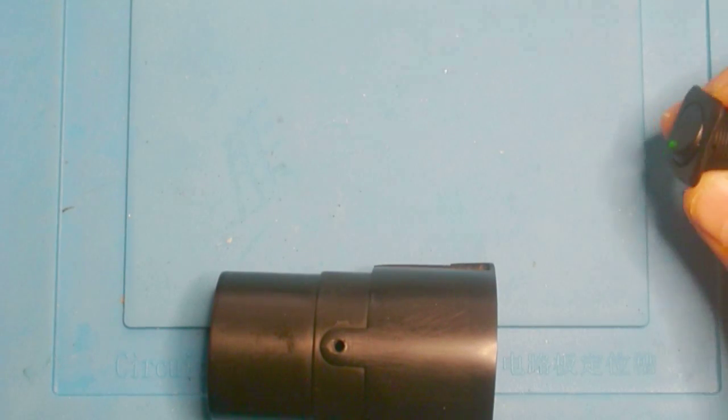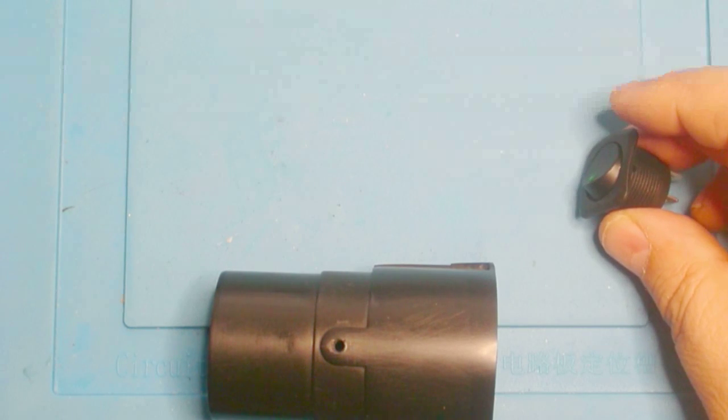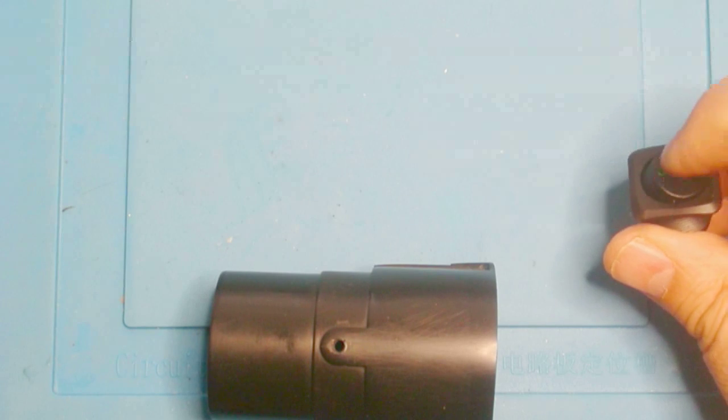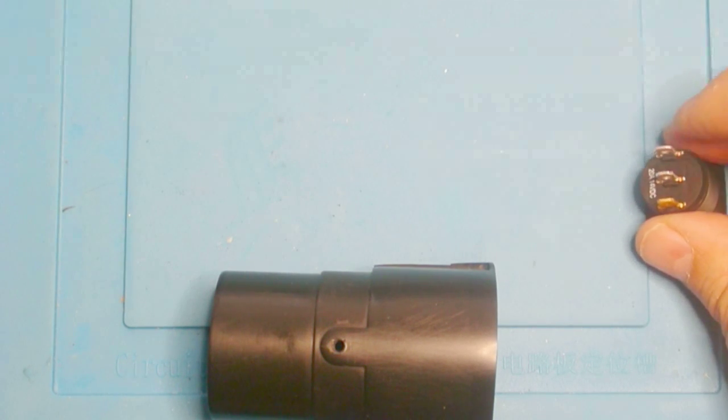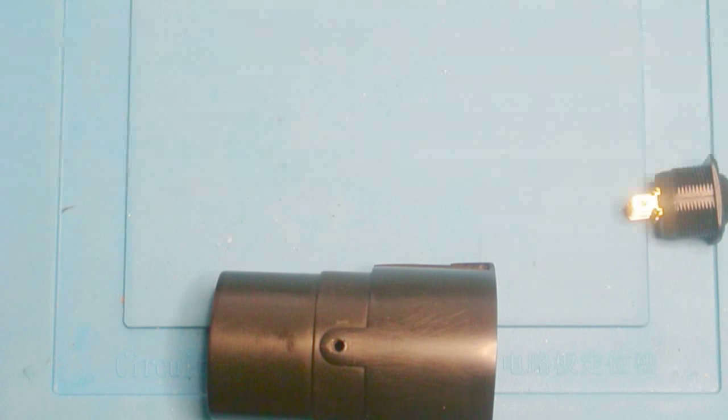You want to get a switch similar to this. This is a Hella H61923001. It has a little LED in it. There are three terminals on the end. There are two silver plated terminals and one copper terminal. The copper terminal is ground for the LED.